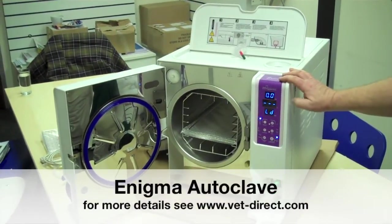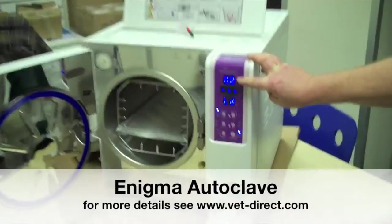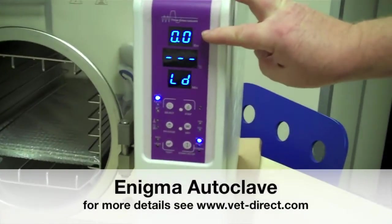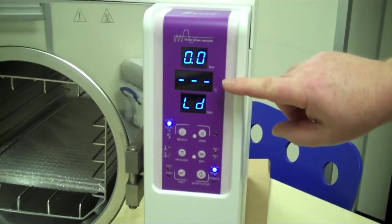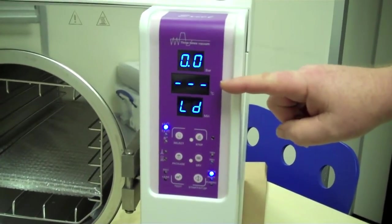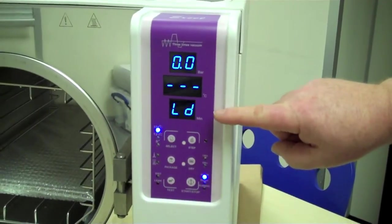On the front panel we have three basic displays. The top display shows the pressure, the middle display indicates where within the cycle the unit is, and the bottom display gives the time for that given part of the cycle.